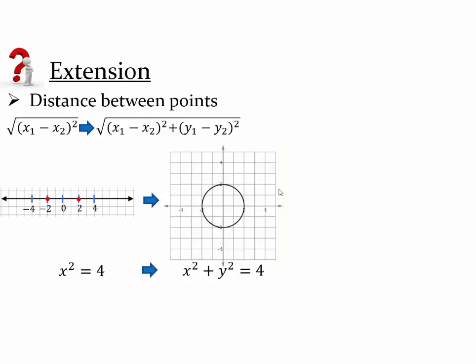And the equation that represents all points that are equidistant from the origin and a distance of 2 away: in one dimension, you had x squared equals 4. In two dimensions, you have x squared plus y squared equals 4. And before in one dimension, you had just two points, 2 and negative 2 on either side of 0, which are 2 away from 0. Whereas now you have all points that belong to the circle that are 2 away from 0, 0.